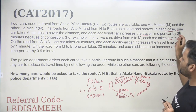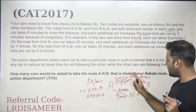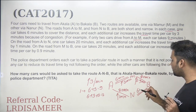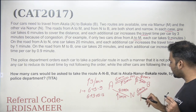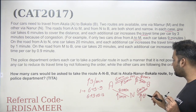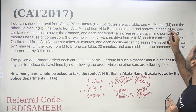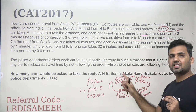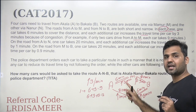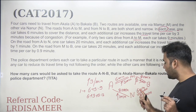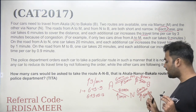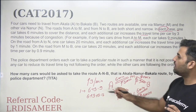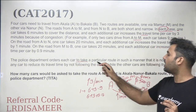In each case — whether you are going from A to M or N to B — the car takes six minutes and every additional car increases the time by three minutes. So the word 'each' means A to M: six minutes base, additional car adds three minutes; and N to B: six minutes base, additional car adds three minutes.